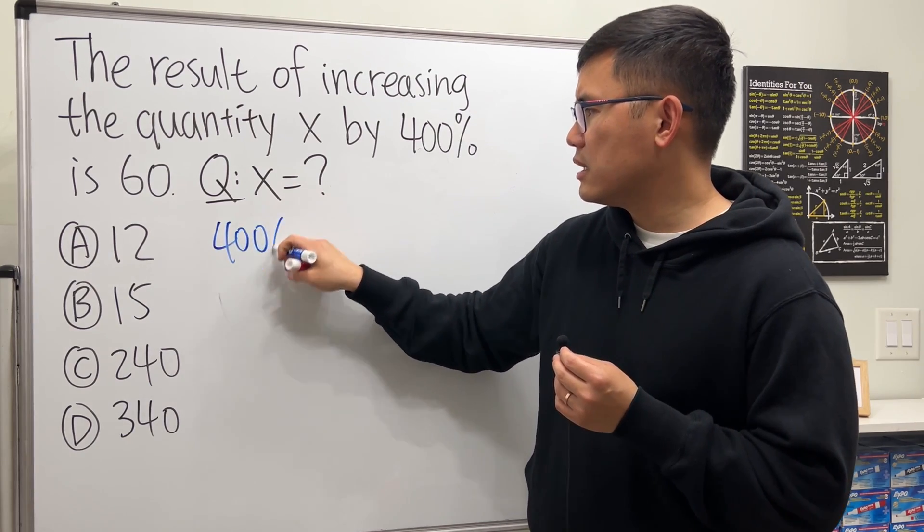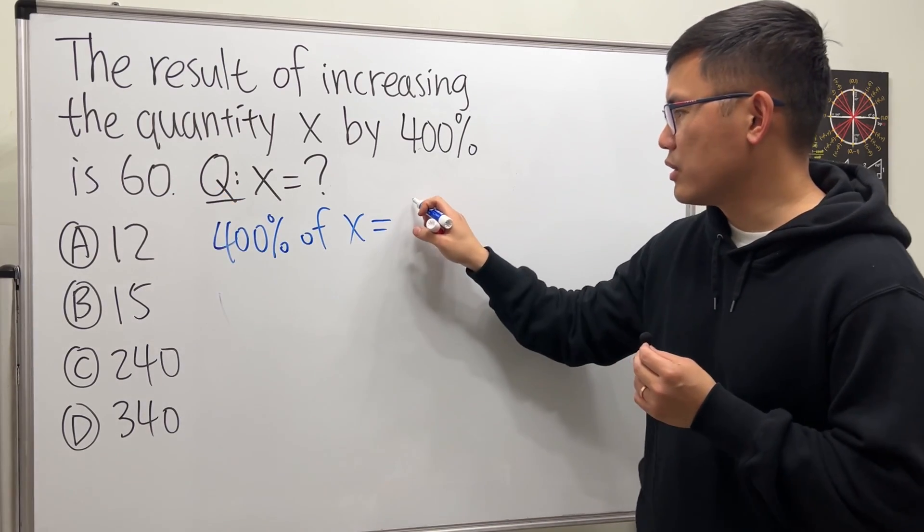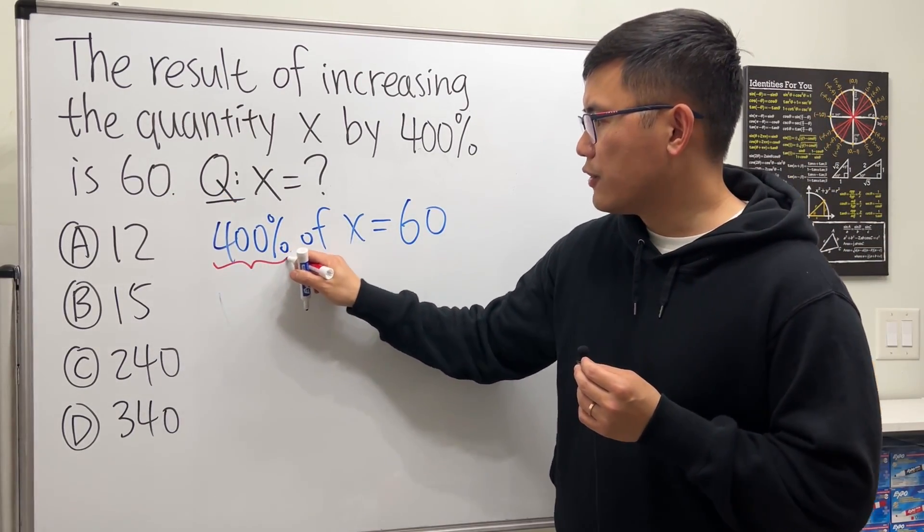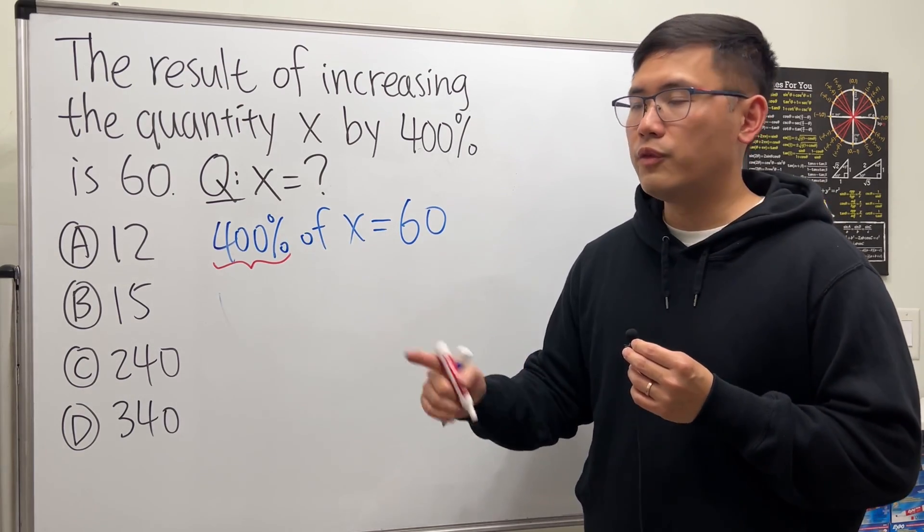They say that result is 60, so they put it equal to 60. Then they change the 400 percent to a decimal - 100 percent is 1, 400 percent is 4.